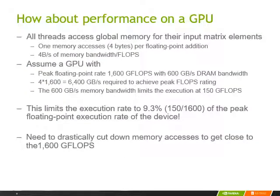Now we are ready to analyze the importance of memory access efficiencies for the image blur kernel. All the threads access global memory for their input matrix elements. We saw from the previous slide that we need to do one memory access — one operand access from global memory for each floating point addition — and these memory accesses are 4 bytes each. So we need to have 4 bytes per second of memory bandwidth for each floating point operation per second throughput. Assume that we have a GPU with a peak floating point execution rate of 1600 gigaflops and 600 gigabytes per second of DRAM bandwidth, which is a fairly typical ratio for modern GPUs.